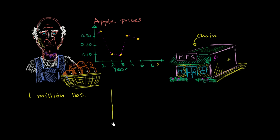They could set up a contract where the chain agrees to buy 1 million pounds at a specified date, let's just say after the harvest, for 20 cents a pound.